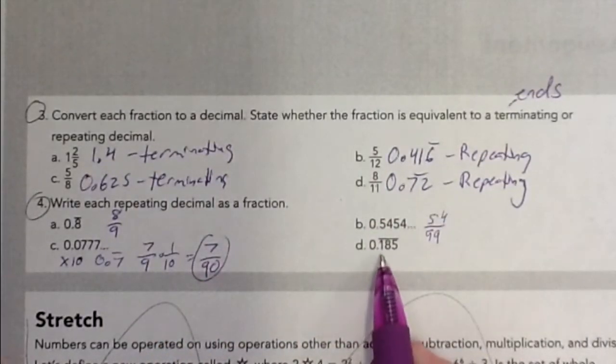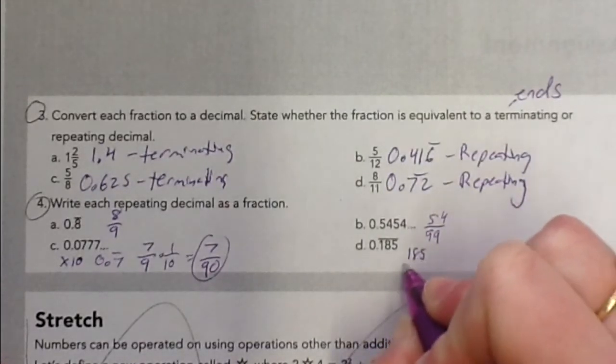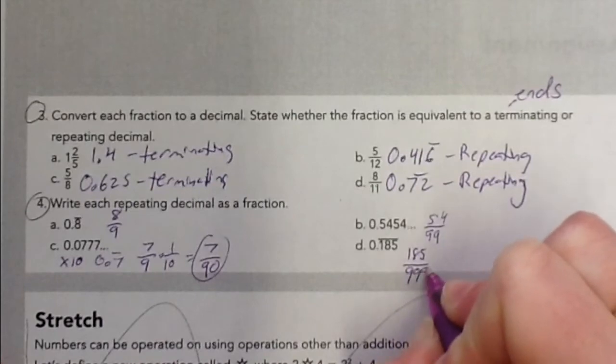Over here for D, I have a 1, 8, and a 5. So I have three digits that are repeating, 1, 8, and 5. So I'll put over three nines.